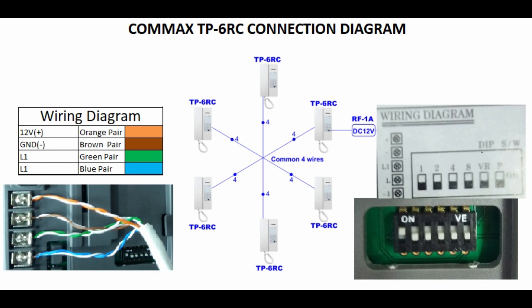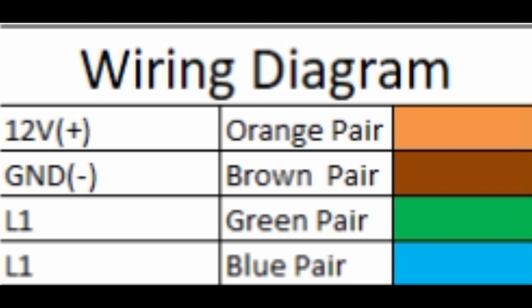We know that Cat6 cable has 4 pair system. In this project I am going to take plus 12 volt as orange pair and brown pair as ground. Then rest of the two pairs, green and blue, just for L1. Here we will take all 6 orange pairs from 6 devices, join together, and connect with the positive terminal of the power supply.